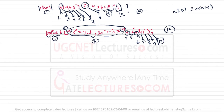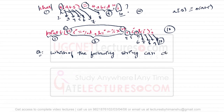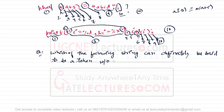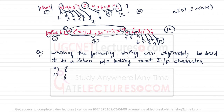Now consider this question: which of the following strings can definitely be said to be a token without looking at the next input character? The options are: (a) opening bracket, (b) 'fun', (c) not-equal-to sign, and (d) a closing bracket.